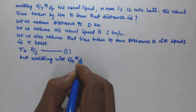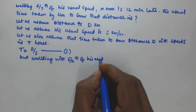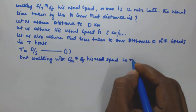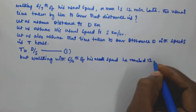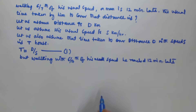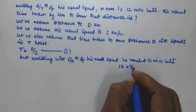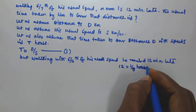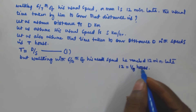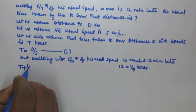It is given that walking at 6/7th of his usual speed, he reaches 12 minutes late. Now 12 minutes late means 12 minutes, which converted into hours is 1/5 hours. So he is reaching 1/5 hours late, meaning the new time taken is t + 1/5.